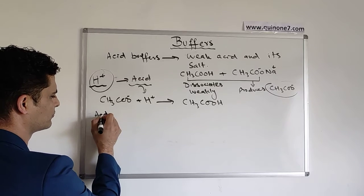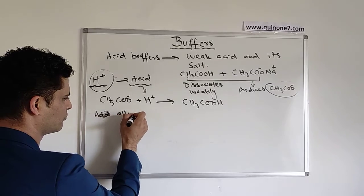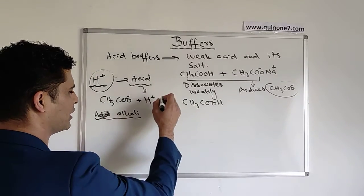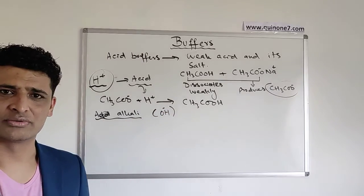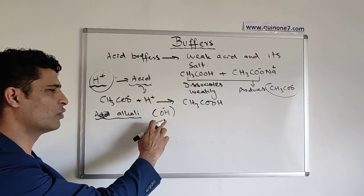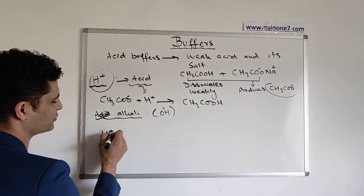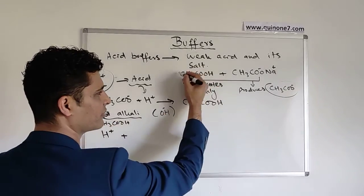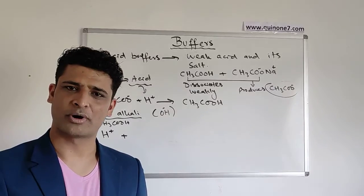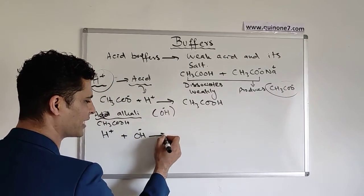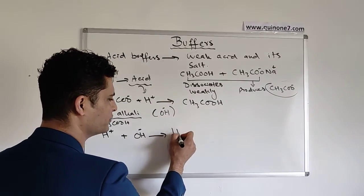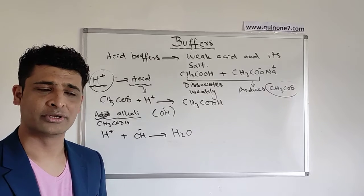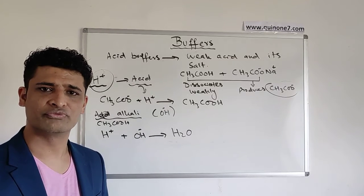But what if you add an alkali into the solution? Adding an alkali means you are adding OH⁻ ions, so something has to remove those OH⁻ ions from the solution. What happens is H⁺ ions in the solution, which come from the weak acid CH₃COOH, will tackle the extra OH⁻ ions being added and produce water. Because it is a poor dissociator, it is not going to produce enough H⁺ ions to tackle all the hydroxide ions.